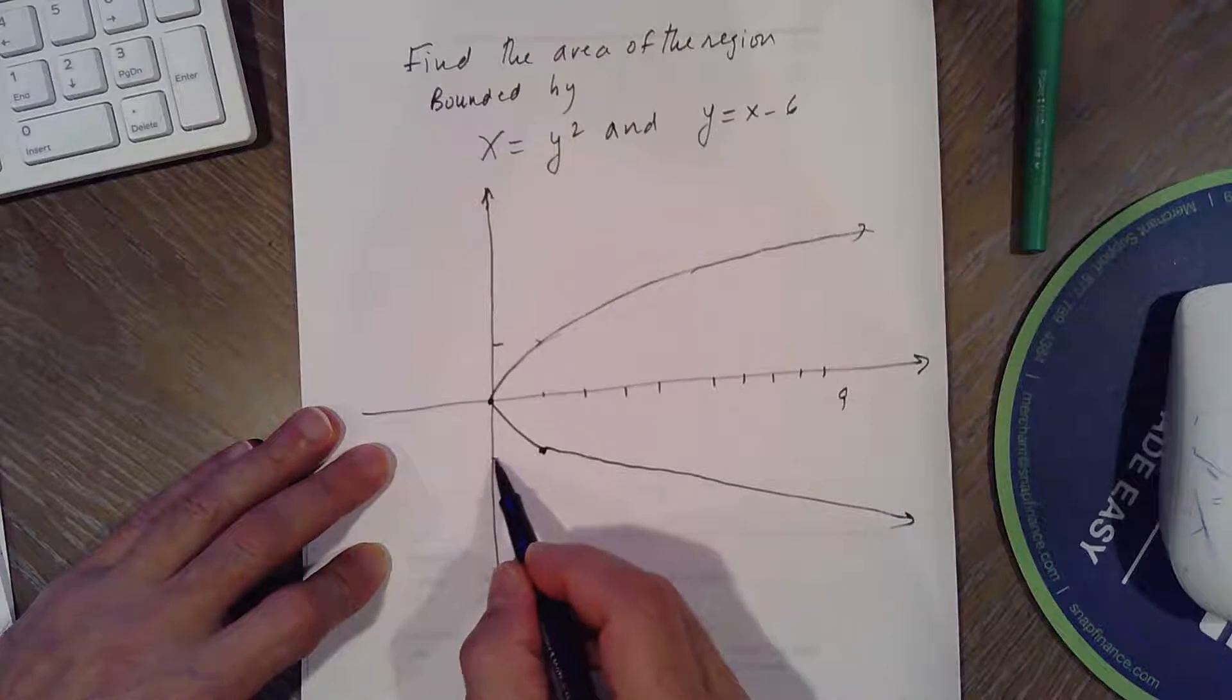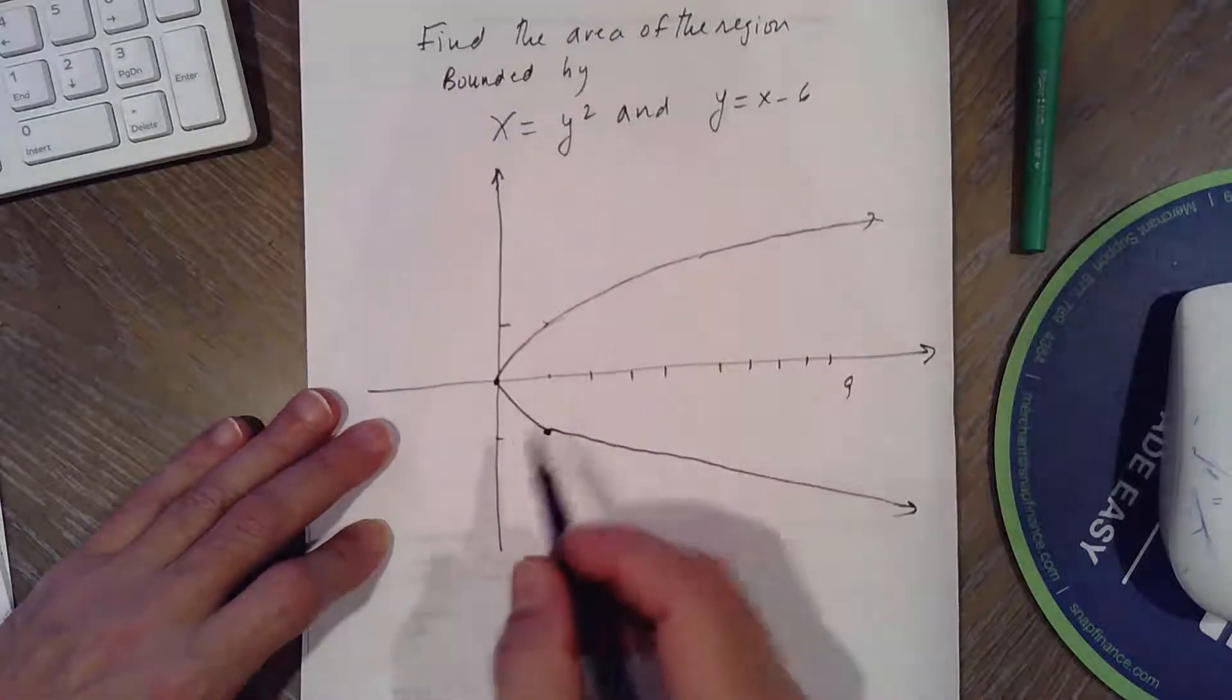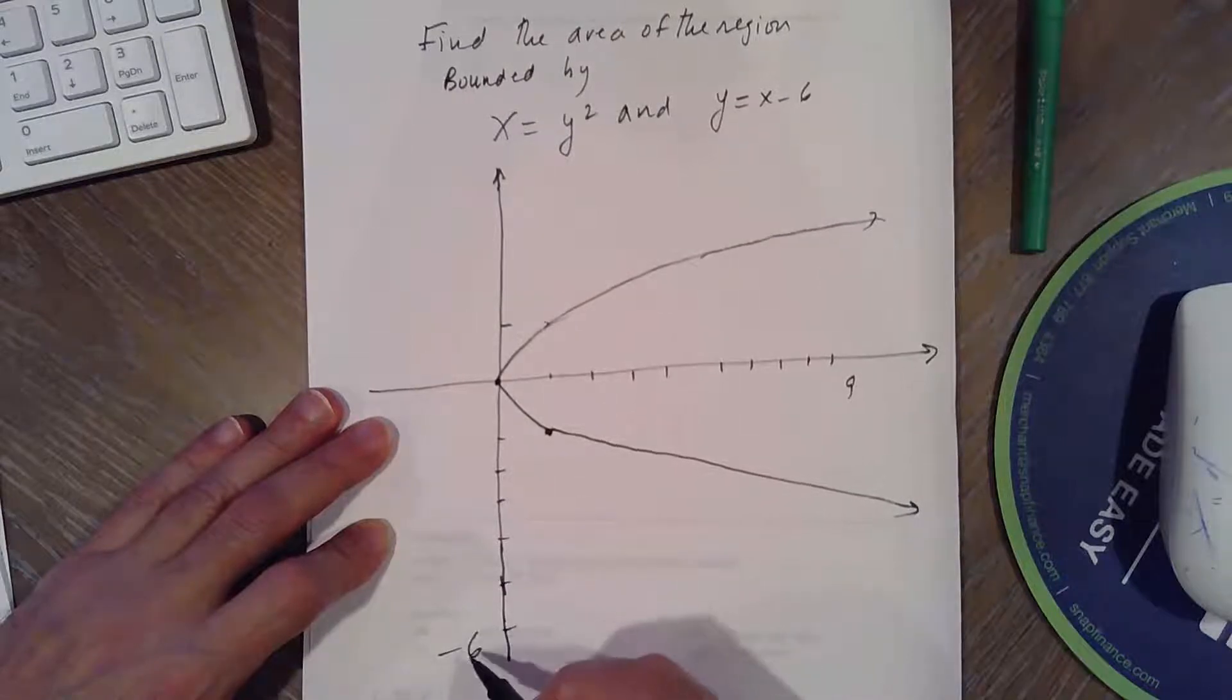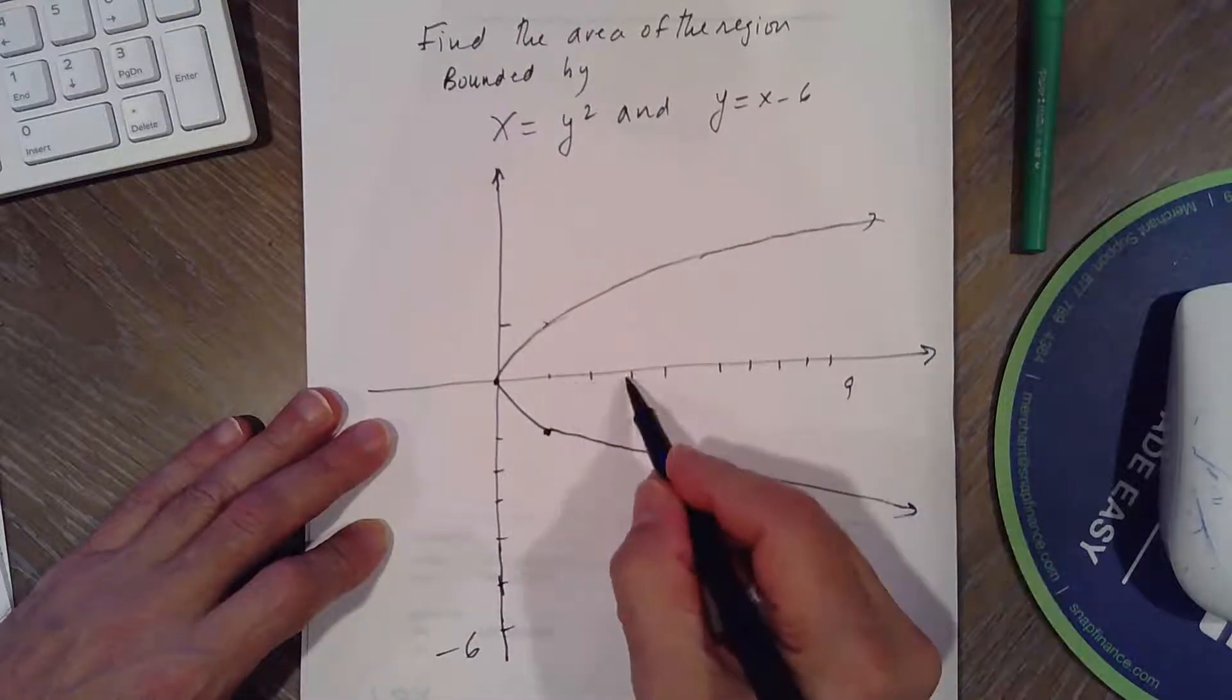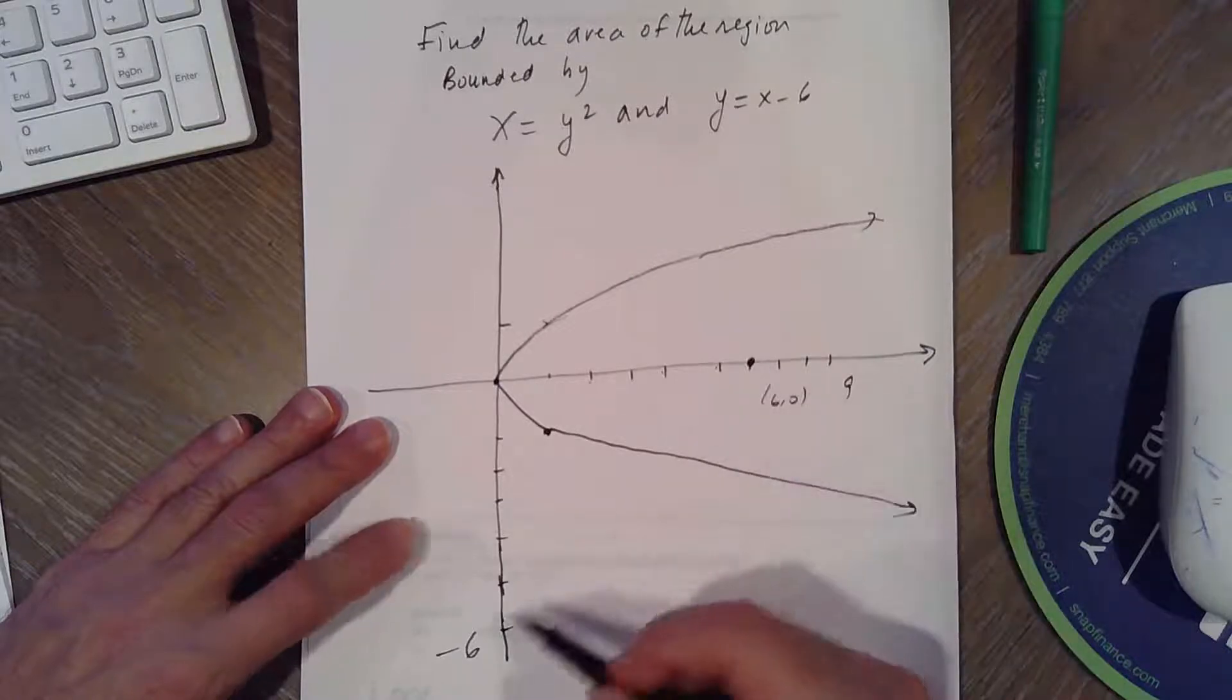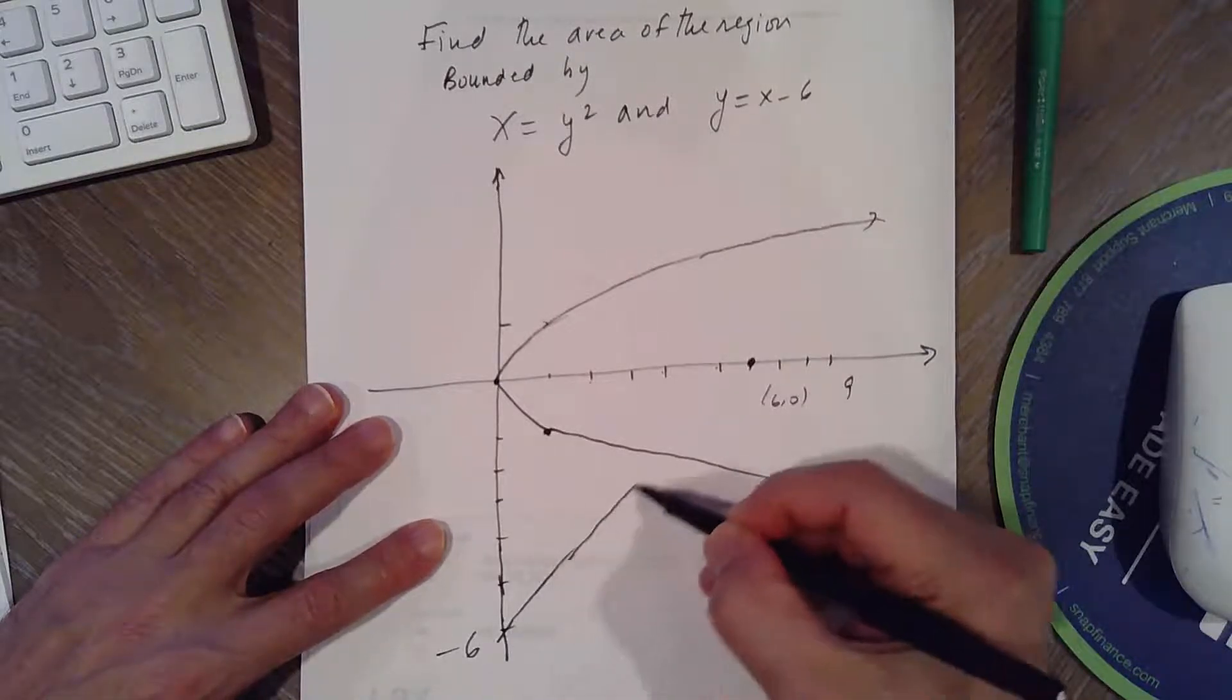And then at Y equals X minus 6, at 0, it's negative 6. And at 6, it's 0. Plotting 1, 2, 3, 4, 5, 6. So basically, it's going to go like this.